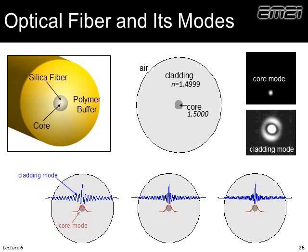We need two modes traveling forward. The core supports a mode because it's high refractive index surrounded by low refractive index — it's a waveguide. The cladding region, with a refractive index of about 1.5 surrounded by air, is also a waveguide — not a very good one and not designed to be one, but it supports many thousands, maybe hundreds of thousands, of modes. Those cladding modes have propagation constants very close to the core mode. So we're coupling between the core mode and a cladding mode.